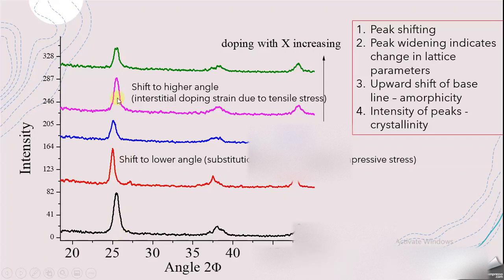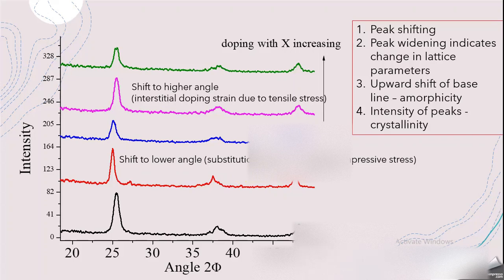The fourth thing to observe after doping is the intensity of the peaks. Sharp peaks indicate increased crystallinity of the sample after doping, while broad and widened peaks indicate decreasing crystallinity due to the incorporation of foreign ions. These are the four things to examine in XRD after doping with certain metals or ions, and that is how you explain the XRD spectra of a doped material compared to the pure material.